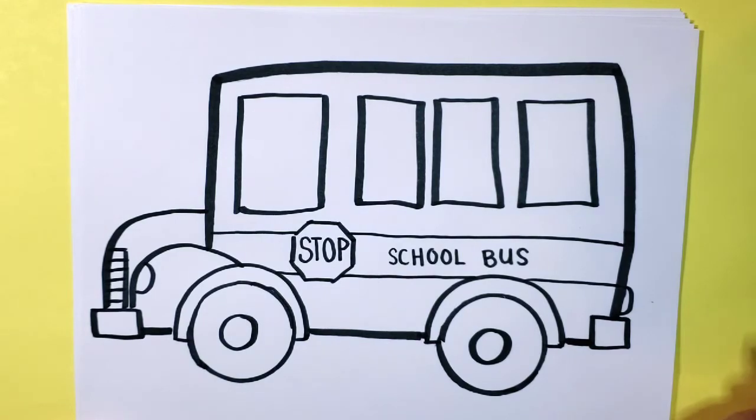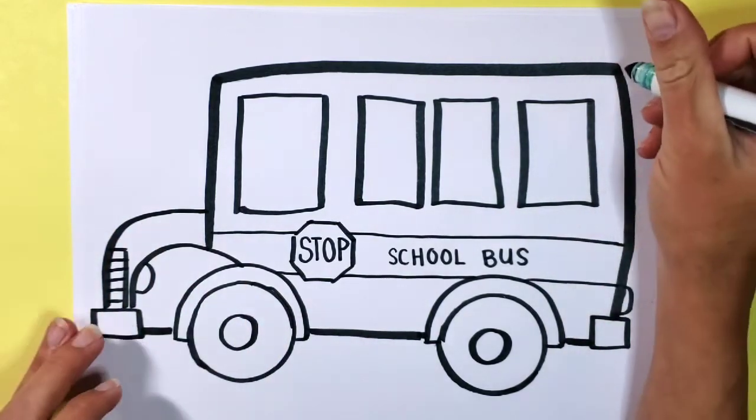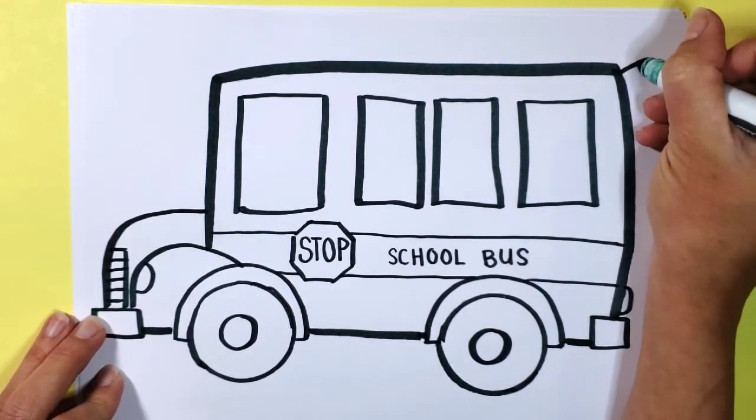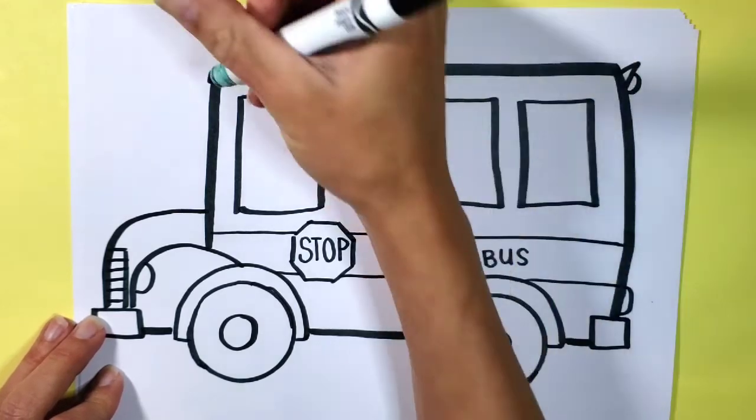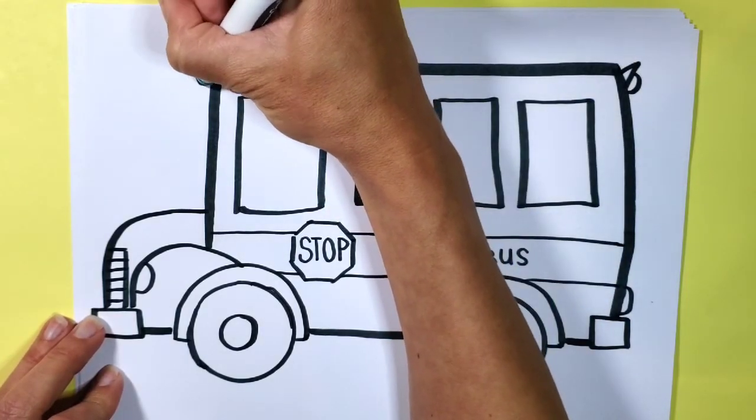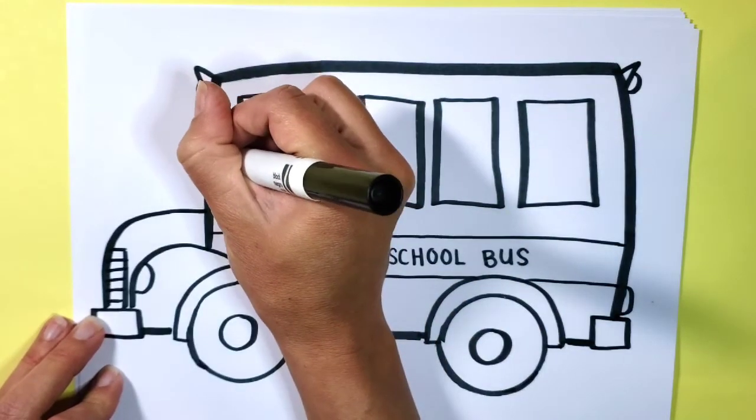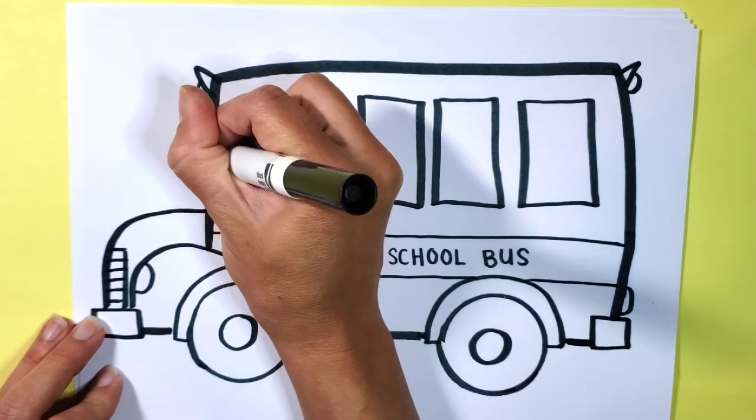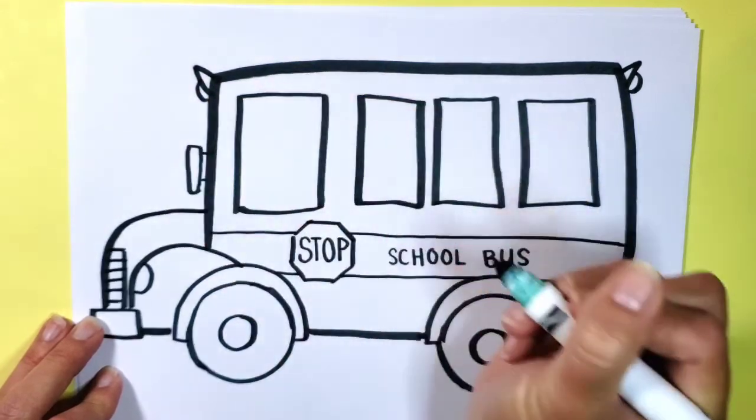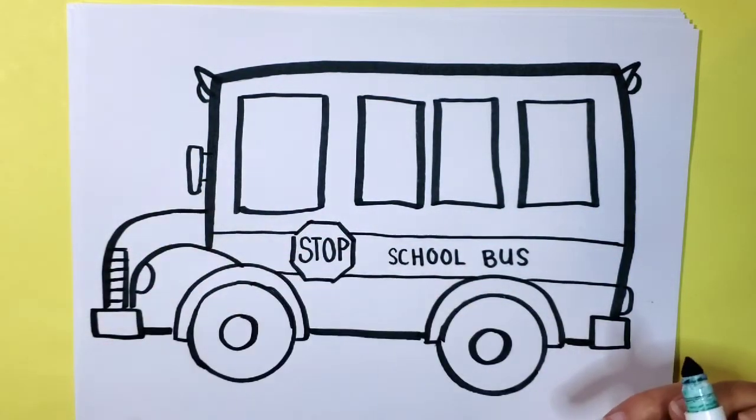Now of course we need some of the details like the people inside and I'm going to put a couple lights on the top here by making these little triangular type shapes with a little light and maybe a little rear view mirror too so that the bus driver can see what's going on behind them.